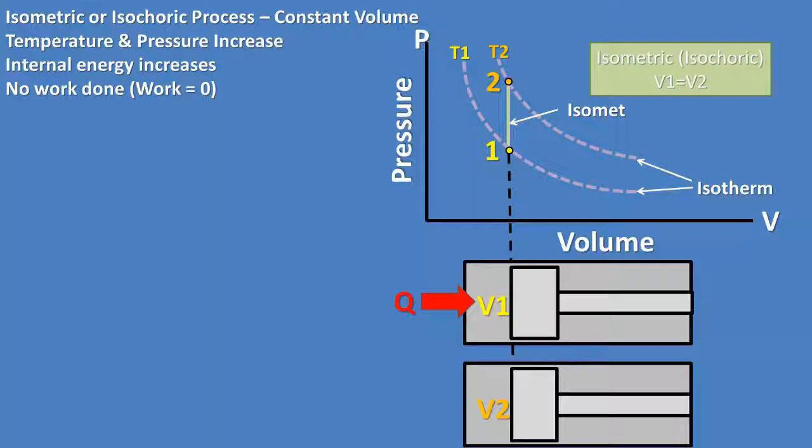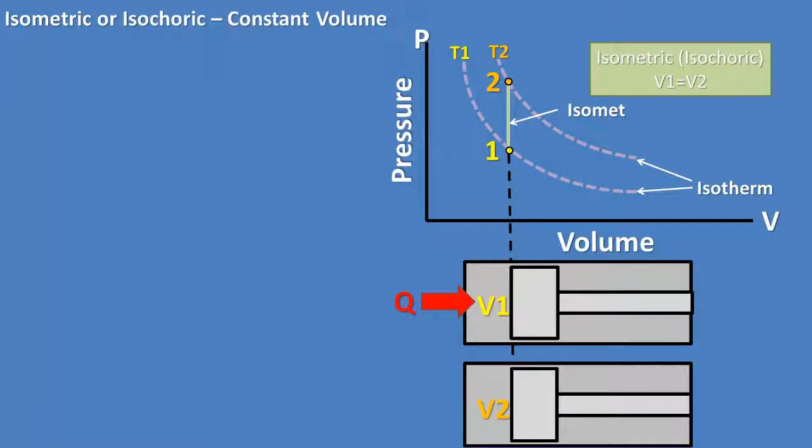In this example, heat is added to air in a piston chamber, which causes internal energy to increase, which causes an increase in the temperature and pressure in the piston chamber. On the top right,